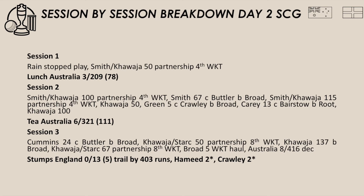Khawaja and Carey added 43 for the sixth wicket, Khawaja and Cummins 46 for the seventh wicket, Khawaja and Starc 67 for the eighth wicket, and Lyon and Starc 18 unbeaten for the ninth wicket. Those were handy partnerships for Australia in terms of getting them past 400 in the first innings. Overall it was a pretty good batting display from Australia today, led by Usman Khawaja who was outstanding.